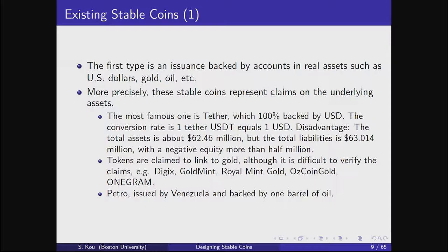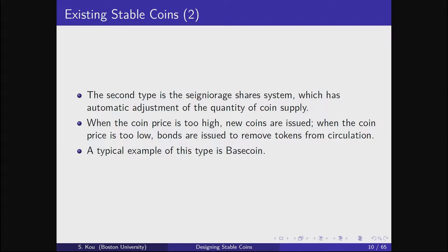The second way is used by Basecoin, which recently went bankrupt. The idea is to set up a kind of federal reserve for the coins issued: whenever the coin price is too high, you issue new coins; whenever the coin price is too low, you remove coins from supply. Of course, that depends on how smart you are — you're doing the same thing as the Federal Reserve. This company was run by people from Princeton, but it's not in good shape now.